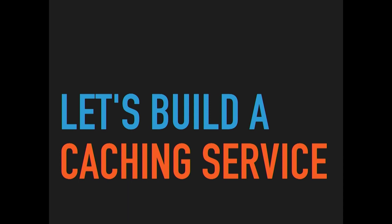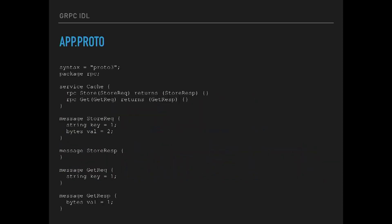I thought we should build a caching service — a really simple key-value service. You put in a key with a value, and then you have another operation to pull it out. What's interesting about this kind of service is that when you define it, you don't actually define it in code first. You define it in an IDL — an interface definition language. This particular language is the protobuf language.